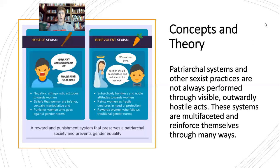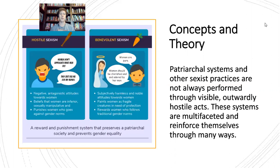Before we jump into the actual historiography and history, I want to specify one final point: patriarchal systems and other sexist practices aren't always performed as visible, hostile, misogynist acts. Sometimes patriarchal oppression and sexism demonstrate themselves in ways that seem very positive but are in fact barriers to equality and equity for women. These systems can be multifaceted and reinforce themselves through a lot of different ways.